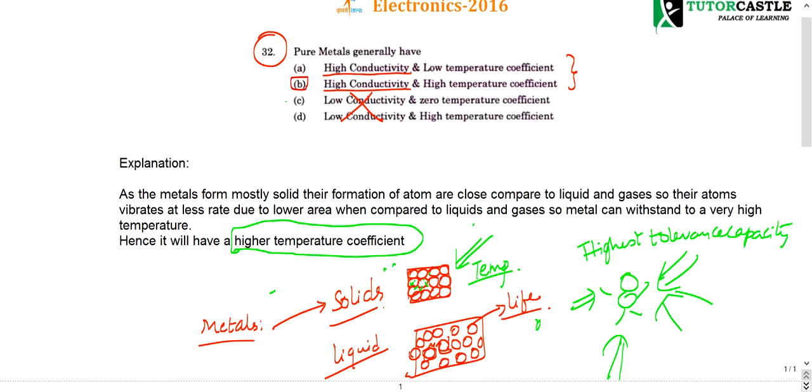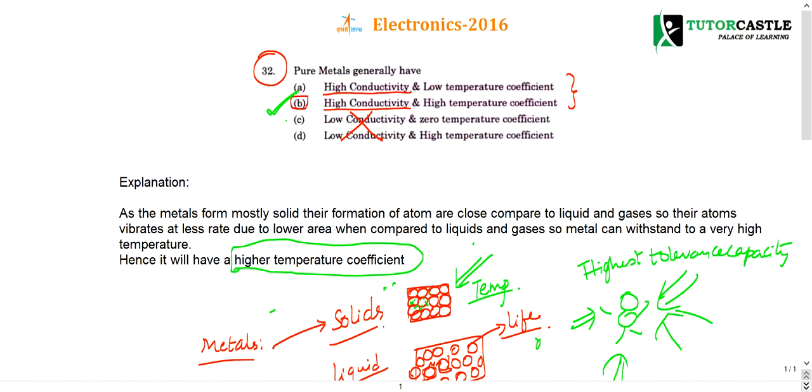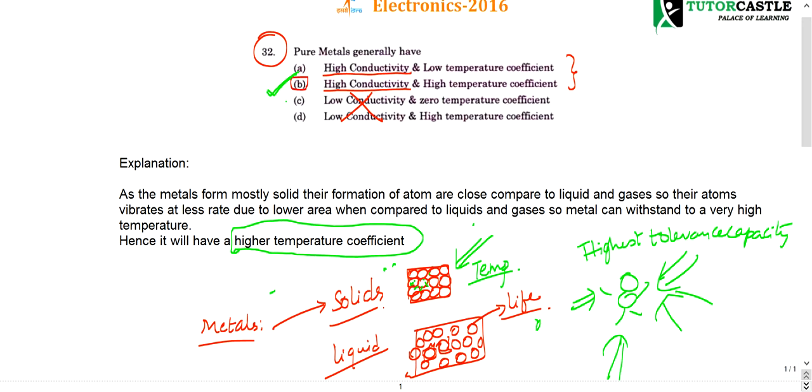Try to memorize that pure metals, unlike solids, have higher conductivity and higher temperature coefficient. I felt this is the best explanation I can give to help you easily understand this material science question. If you have any queries, post them in the comment box and subscribe this channel for more updates and video lectures. Thank you.